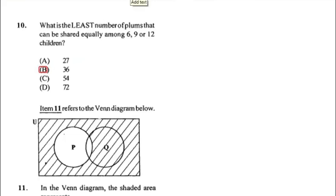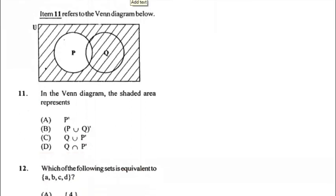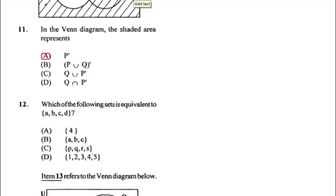Number eleven: in the Venn diagram, the shaded area represents everything except P. Answer A says 'not P' — the small apostrophe above P means 'not.' You can confirm by checking the other answers: C and D only look at the intersection and union of Q and P, but other areas outside Q and P are also shaded, including the outer region. Answer B looks at 'not the union of P and Q,' so our answer remains A.